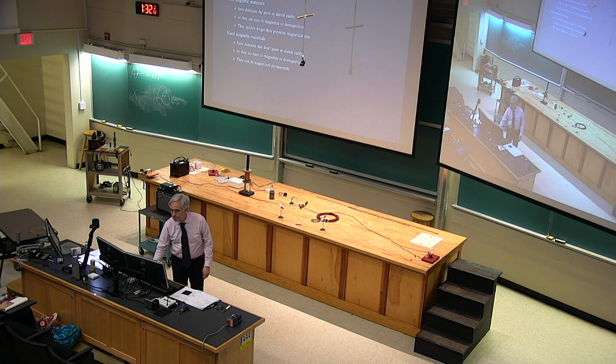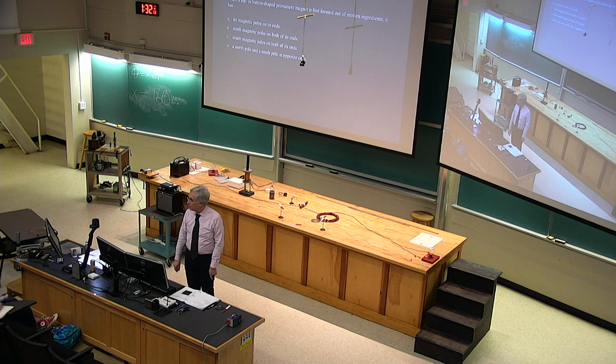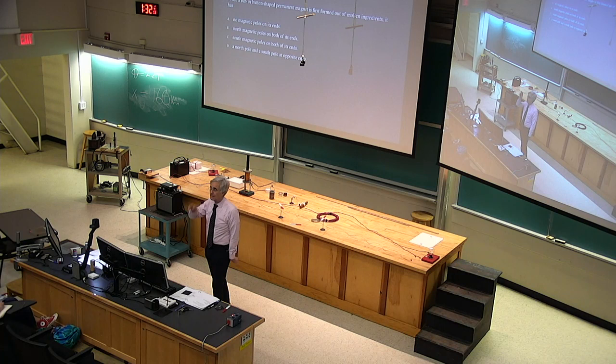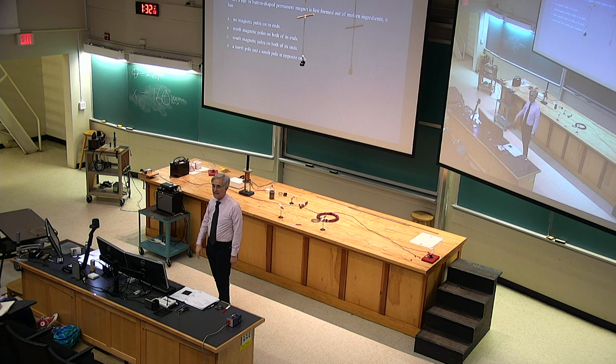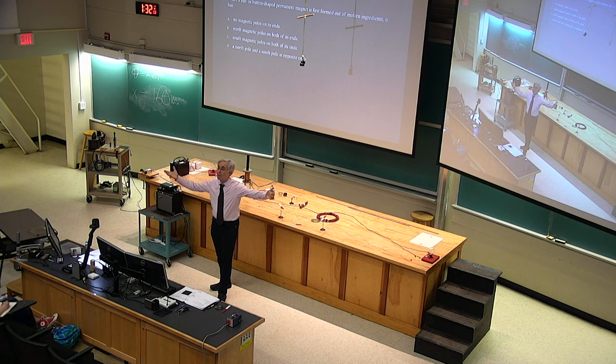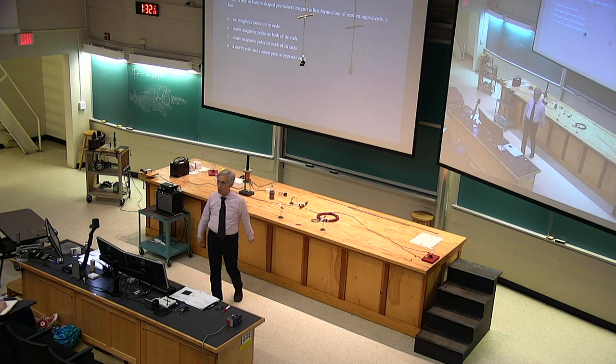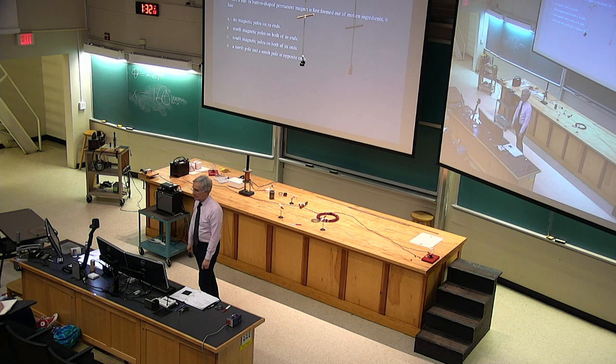When a bar magnet or button magnet is first formed out of molten ingredients, it has no magnetic poles on its ends. It's broken up into domains which cancel — there's no reason why one end would be a pole and the other not; it's randomized. You have to magnetize it. So a credit card when it was first made had no magnetization.